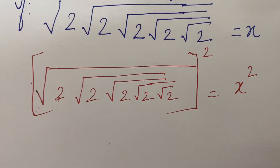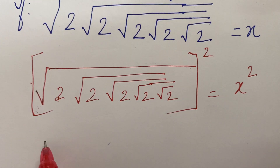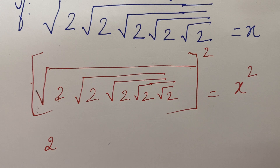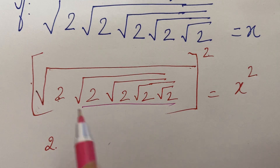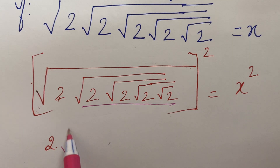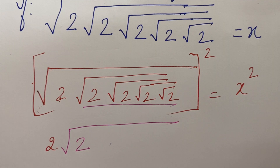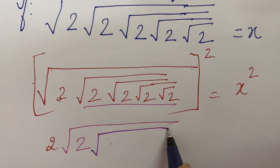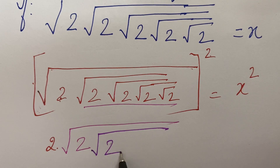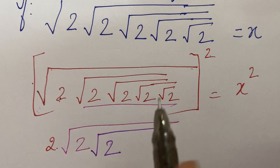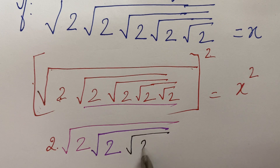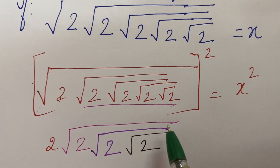So what do we write here? 2. Now we have written 2. Now the remaining part — this 2, then another 2, then another 2.